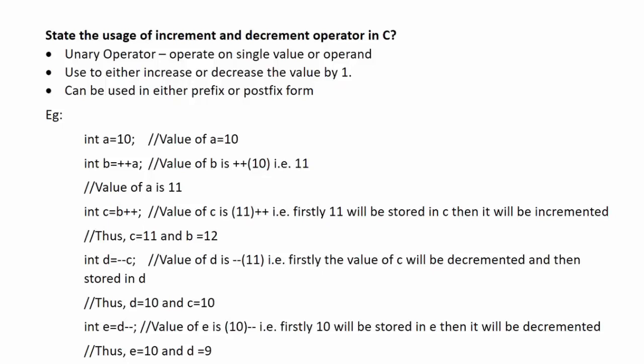Next question: state the usage of increment and decrement operators in C. Both the increment and decrement operators are unary operators — they operate on a single value or operand. They only need one operand to operate. They are used to either increase or decrease the value by one. If you are using the increment operator, it will increase the value by one; and if you are using the decrement operator, it will decrease the value by one. They can be used in either prefix form or postfix form.